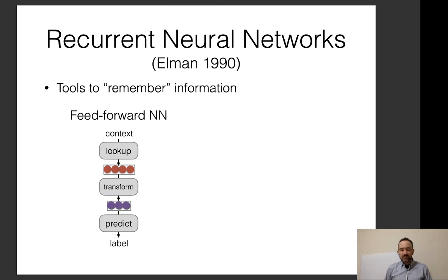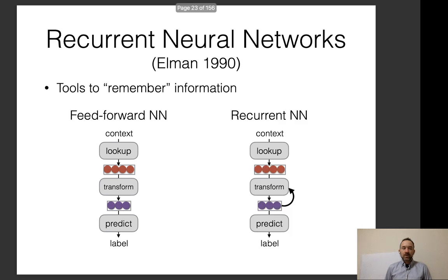To contrast with feedforward neural networks: feedforward networks have some variety of context, do some lookup and transforming of representations before predicting a label. A recurrent neural network differs in that we look up and transform context, and when we want to do the next transformation at the next time step in a sequence, we feed in the extracted features from the previous time steps.